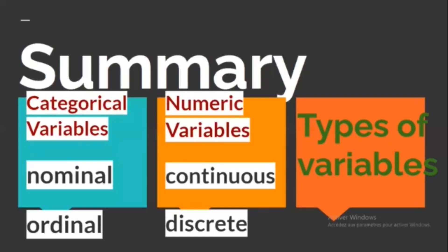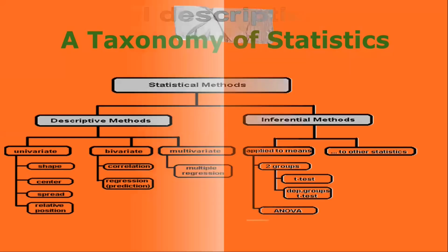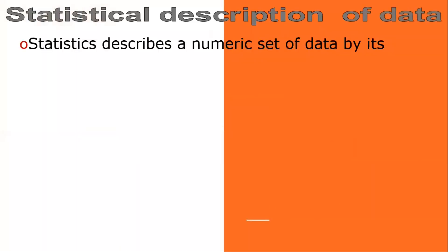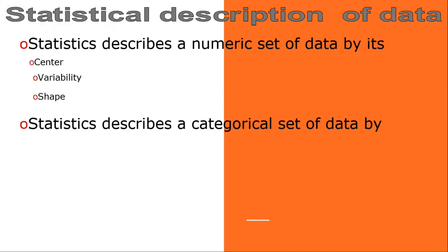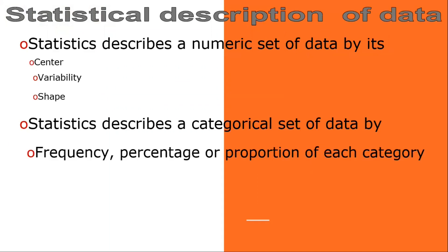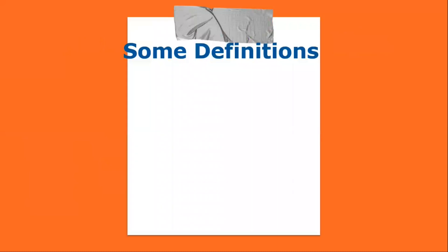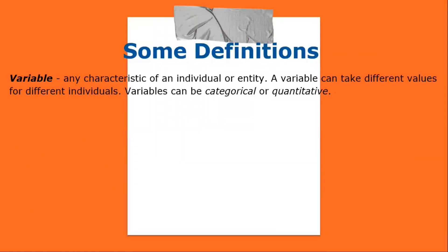In summary, we have two types of variables: categorical variables, which are divided into nominal and ordinal, and numeric variables, which are divided into continuous and discrete. Statistics describes a numeric set of data by center, variability, and shape. Statistics describes a categorical set of data by frequency, percentage, or proportion of each category.